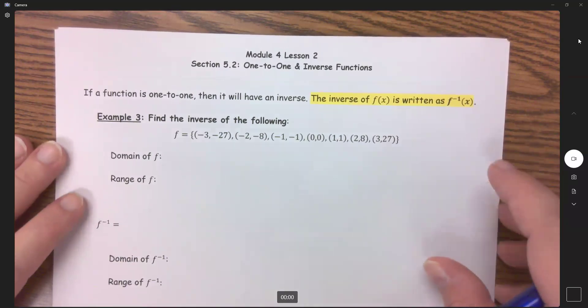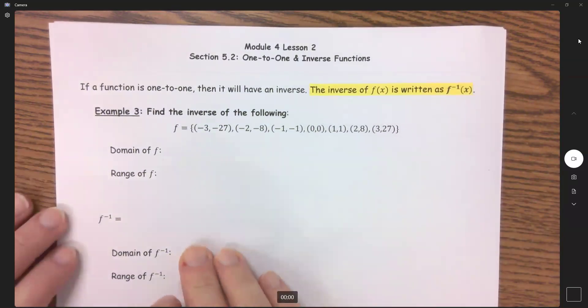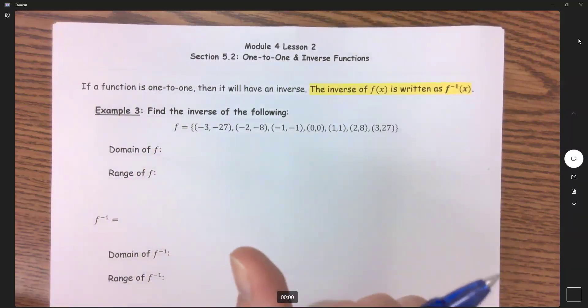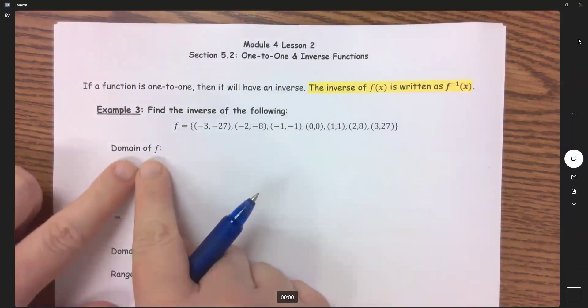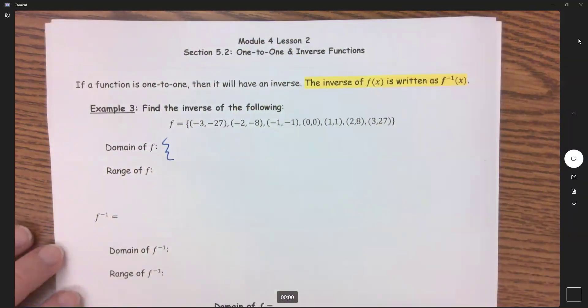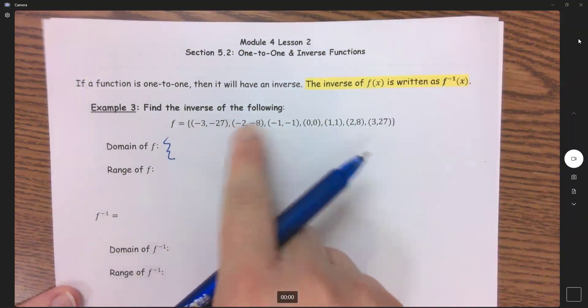So example three says find the inverse of the following. Before we do that, I want to go over what the domain and range is of my function right here. So my domain, you have your squiggly fancy brackets. Your domain are all of your x coordinates here.